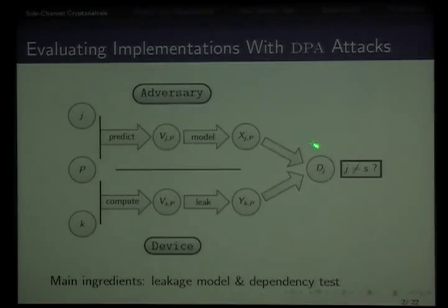You can try to exploit this dependency to recover the key. The adversary tries sub-keys, has the hypothesis, predicts what would be computed during the cryptographic operation, models how this value should leak into the physical medium, and then tries to relate his predictions to his observations. There is some kind of dependency test, and the key hypothesis that relates best to the actual observations should be the correct one.